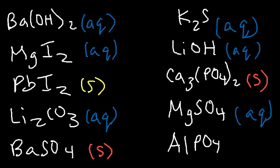And lastly, aluminum phosphate. Phosphates are generally insoluble, and aluminum is not an exception, so this is going to be a solid. It's insoluble.